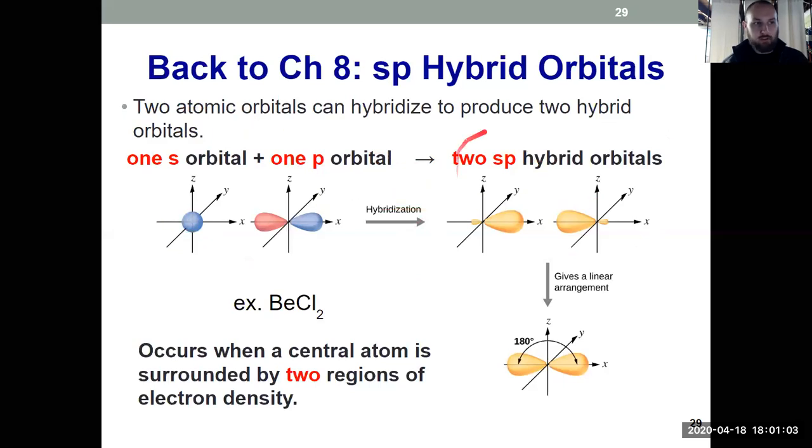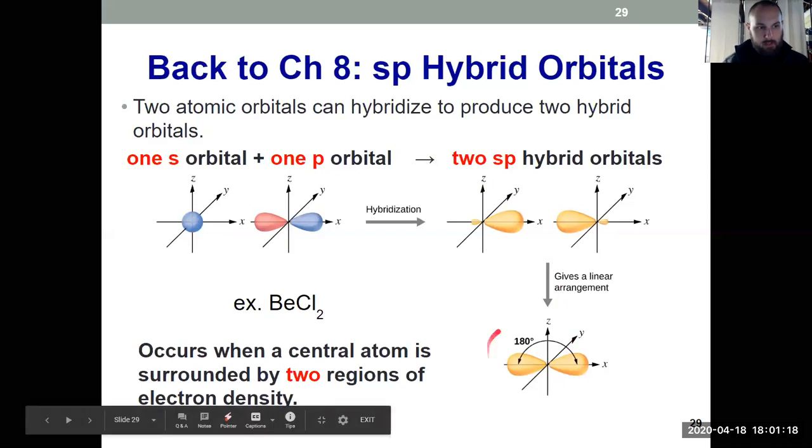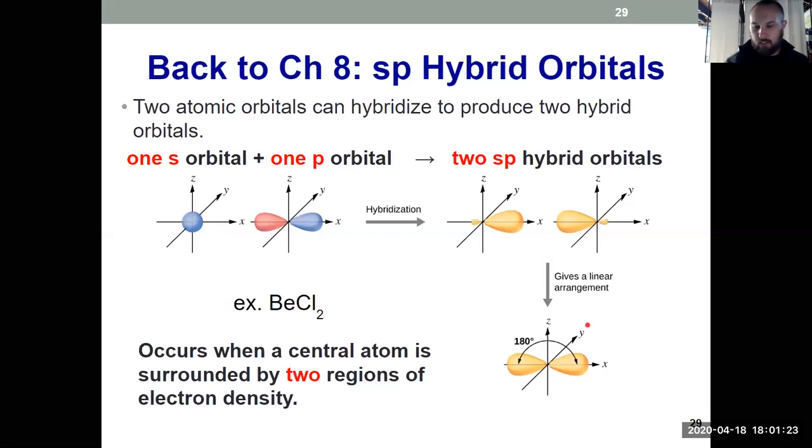Two went in, two come out. And that's why they're called sp-hybrid orbitals, because they came from one s and one p. So those are our two new orbitals, and they want to be as far apart as possible. So they end up being linear, 180 degrees apart, which is the geometry that we would have predicted for BeCl2 in Chapter 7.